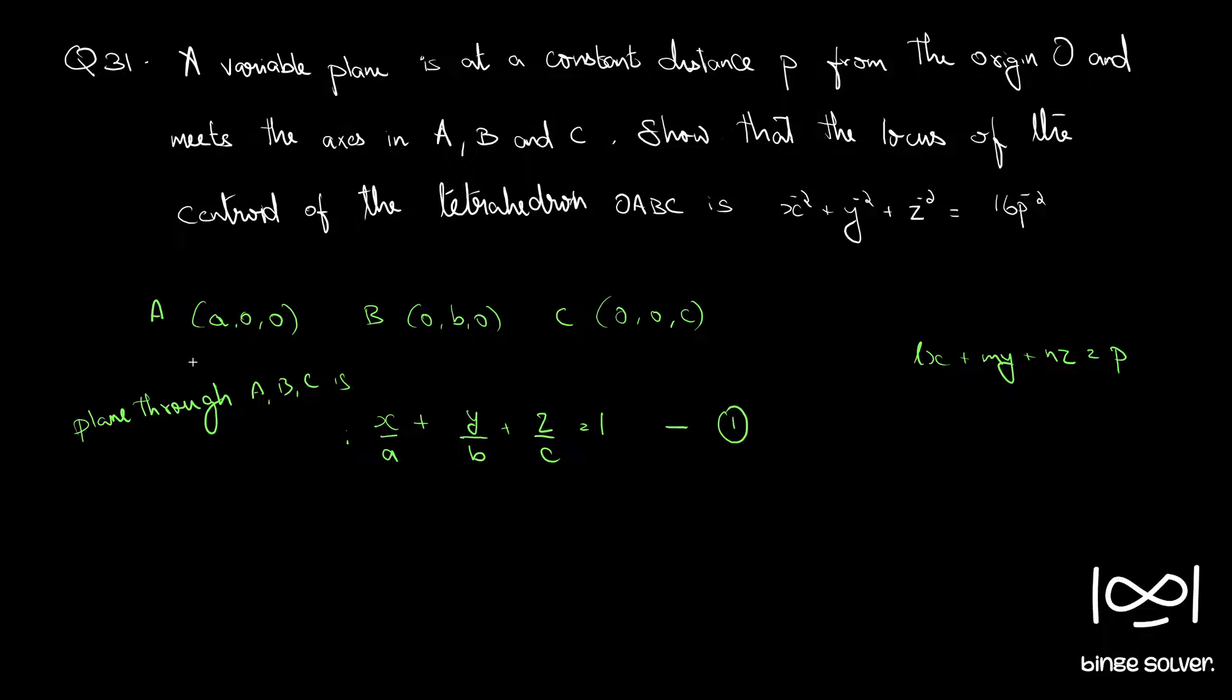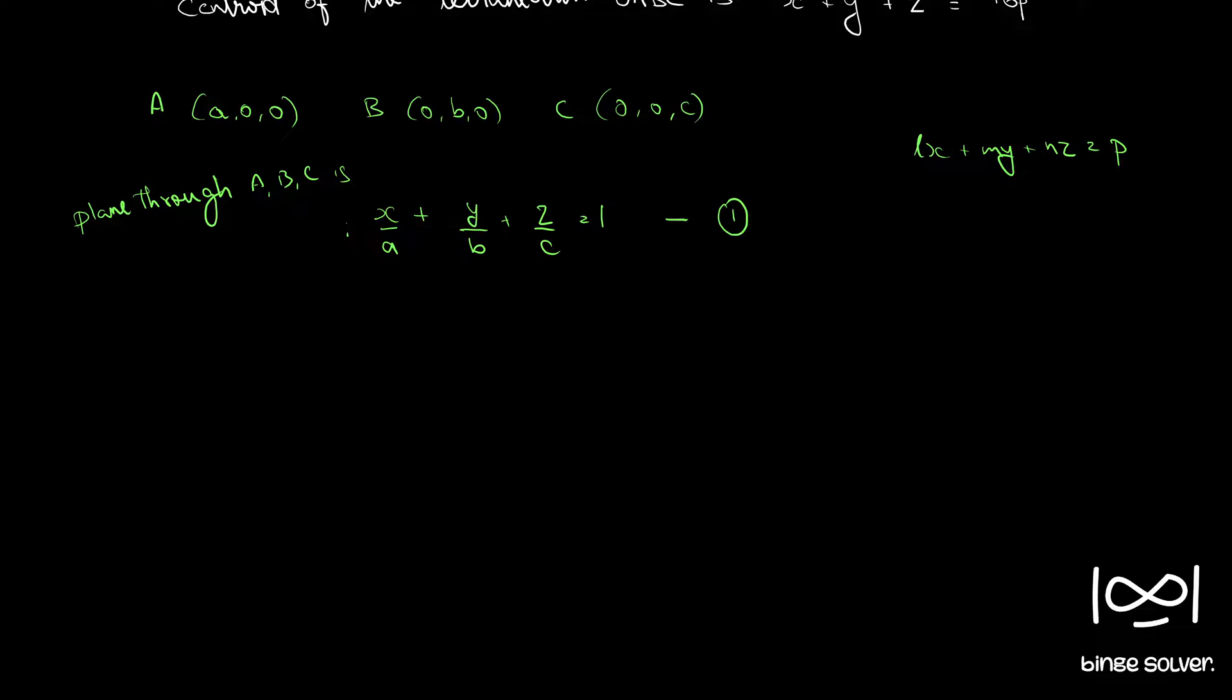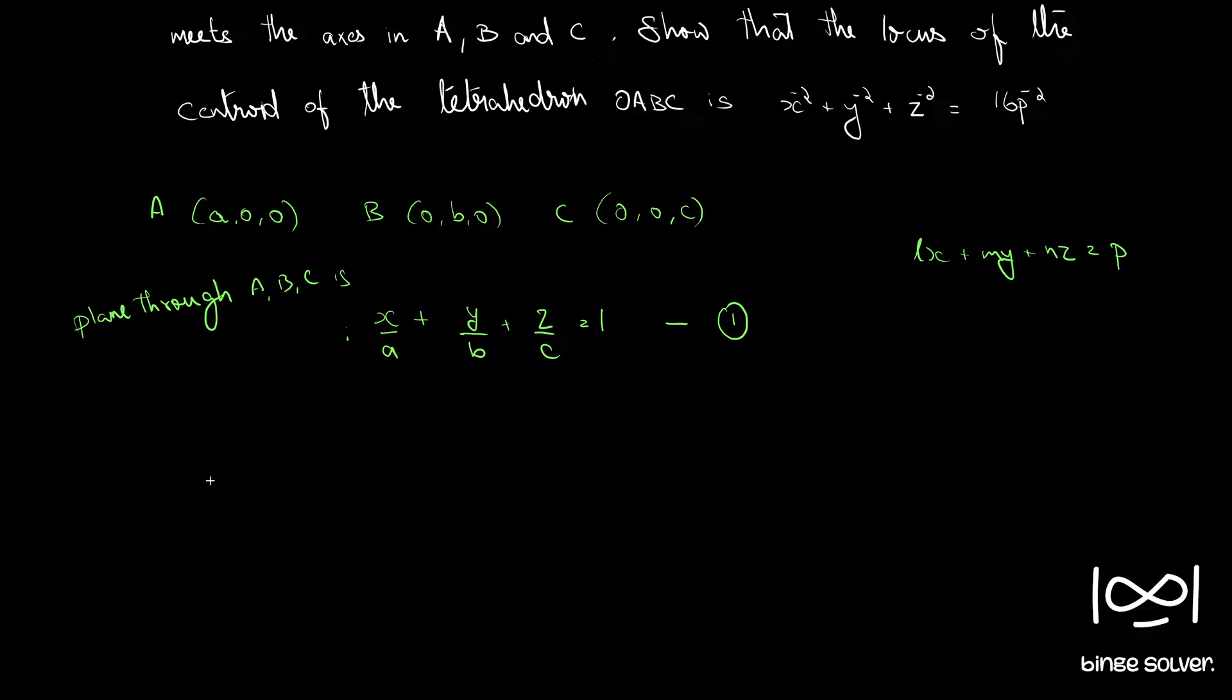Now this represent a plane that passed through these three points and we are given that this plane is at a constant distance p from the origin. So if we are given a plane ax plus by plus cz plus d equal to 0, the distance from the point x1 y1 z1 to this plane is given by ax1 plus by1 plus cz1 plus d by root of a square plus b square plus c square. This is the distance from this point to this plane. We are going to use this formula here.